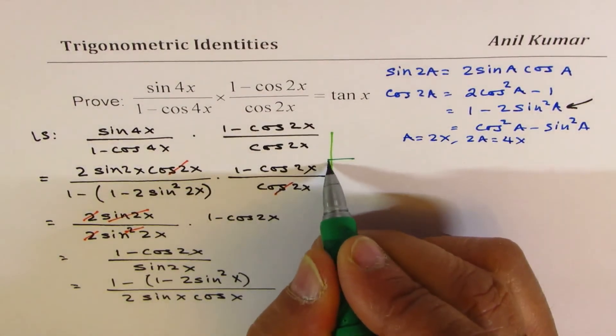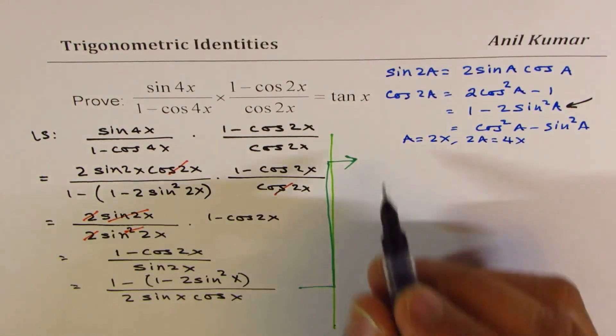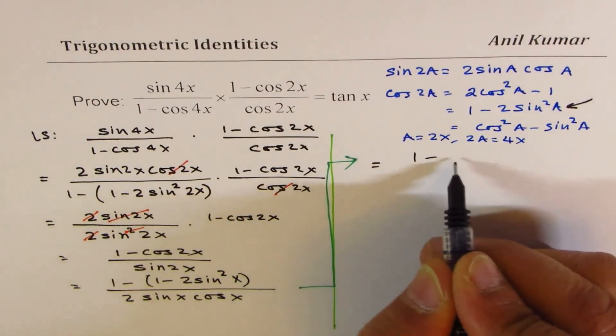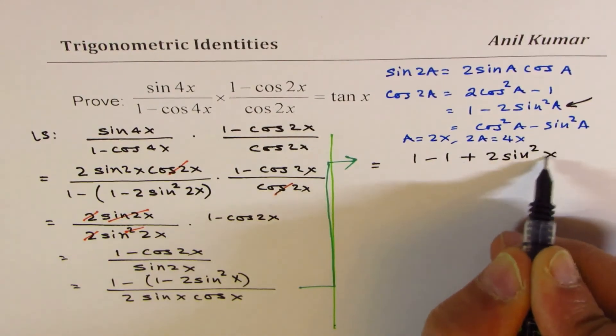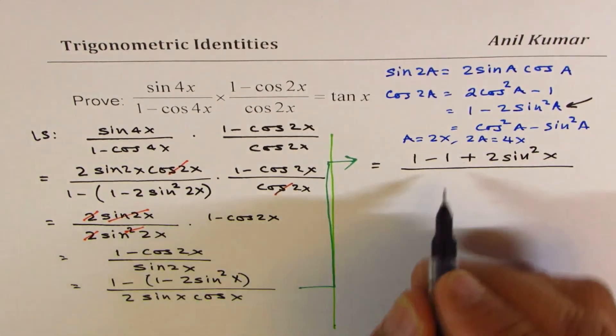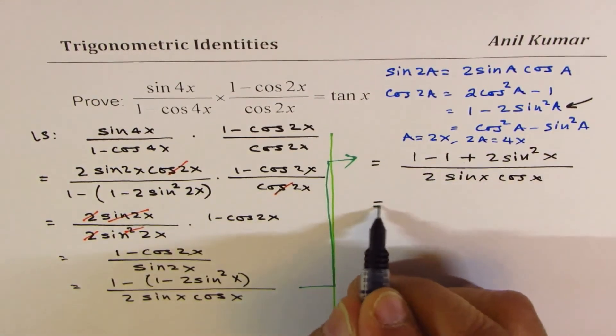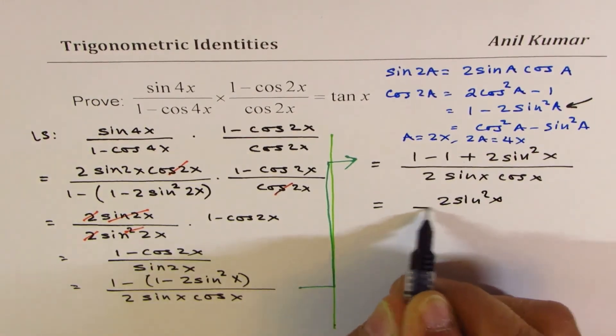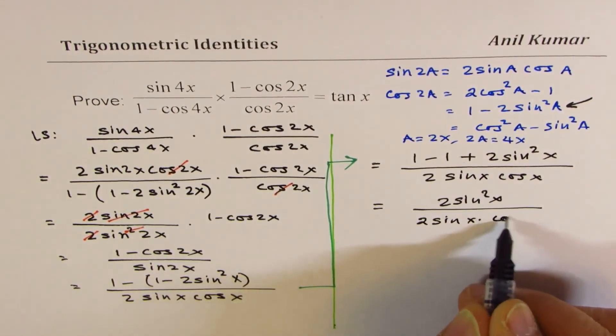So let's move on to this side. We can write our left side as equal to, if I open this bracket, 1 minus, let me write this like, 1 minus 1 plus 2 sine square x divided by 2 sine x cos x. 1 minus 1 is 0, so we are left with 2 sine square x over 2 sine x cos x.